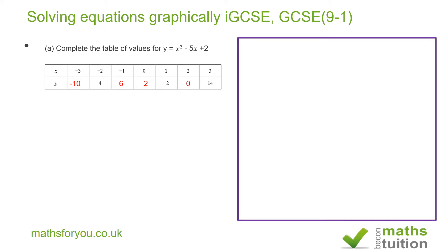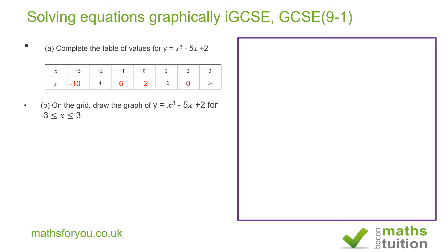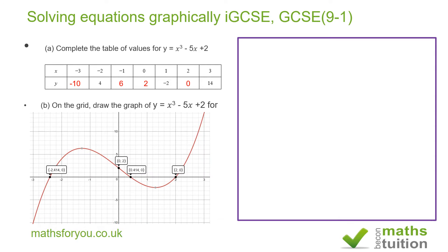Part b says: on the grid, draw the graph of y = x³ - 5x + 2 for values of x between -3 (included) and +3. This is my graph there.